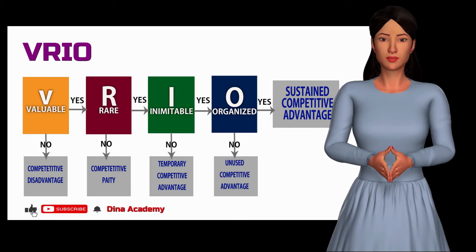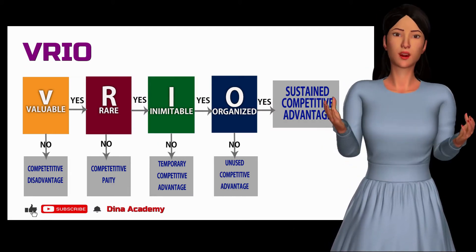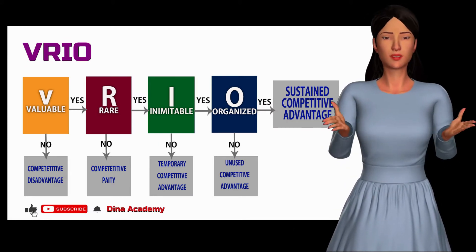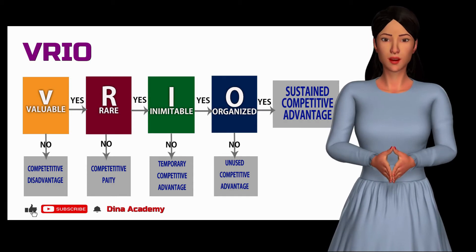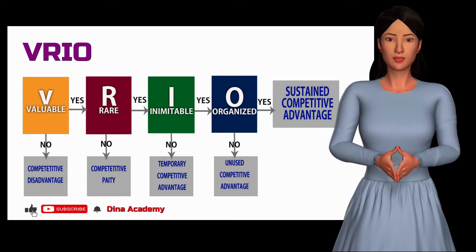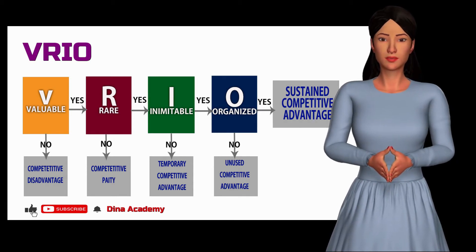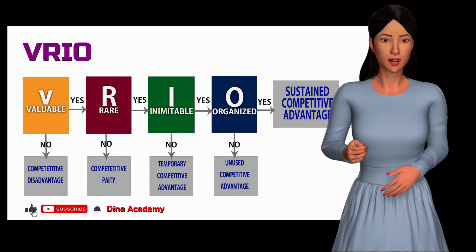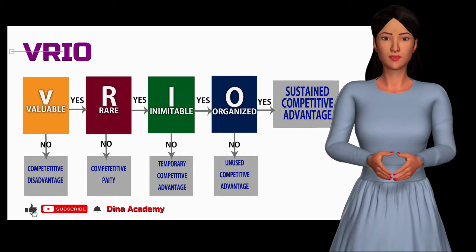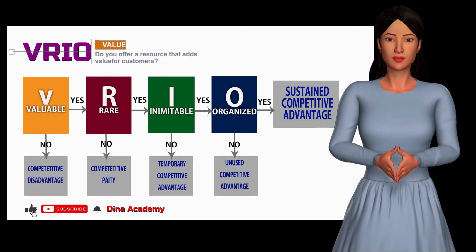VRIO is an acronym for a four-question framework of value, rarity, immutability, and organization. These four components are typically approached in the style of a decision tree.